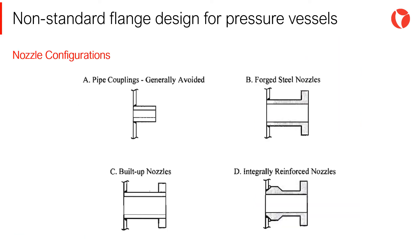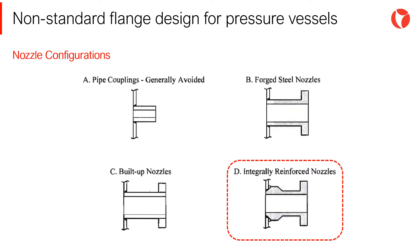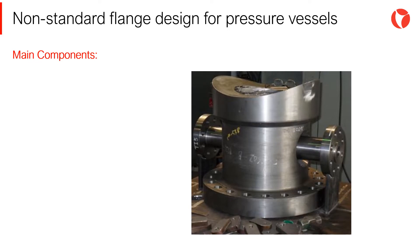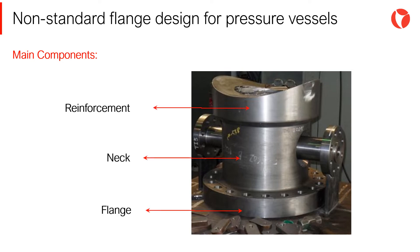There are different nozzle configurations for pressure vessels, accounting for different service requirements and design conditions. Often, non-standard flanges using nozzles follow the integral reinforced configuration as shown in the picture. In other words, an integral flange is formed by the flange, the neck and the reinforcement. In this case, the flange is a component of an integral piece.